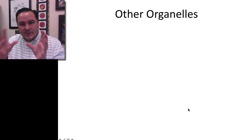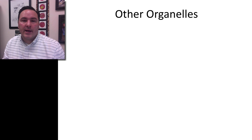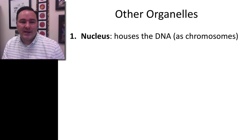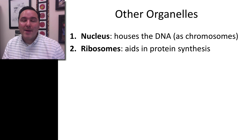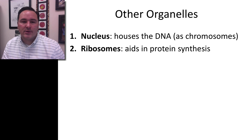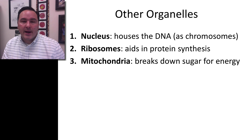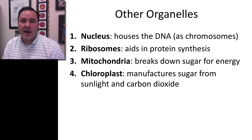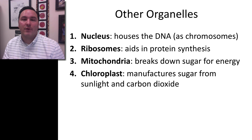Cells, in addition to this outer membrane, also have lots of other organelles. Here are some of the most common ones. The nucleus houses the DNA. Ribosomes are structures that aid in protein synthesis — we'll learn more about those in detail later. Mitochondria break down sugar and make energy — ATP. And chloroplasts manufacture sugar from sunlight and carbon dioxide, so chloroplasts are the things that carry out photosynthesis.